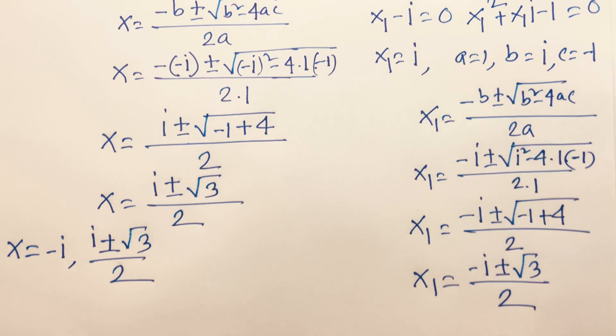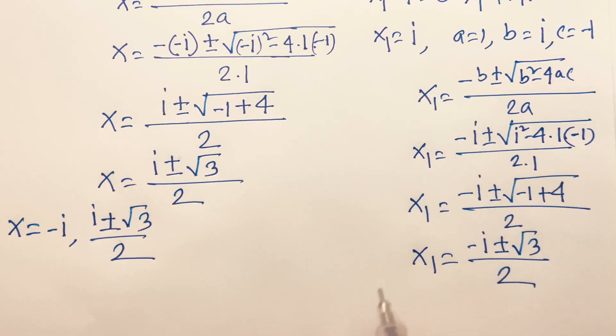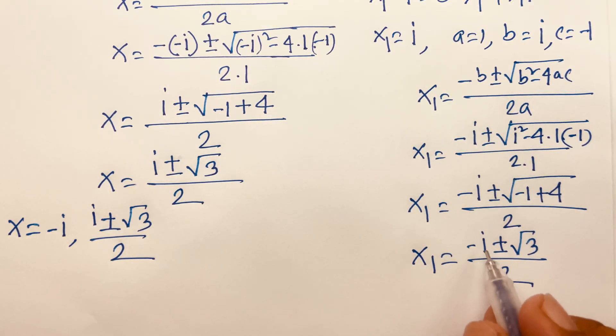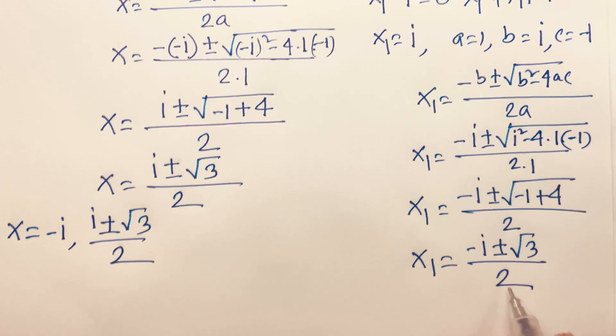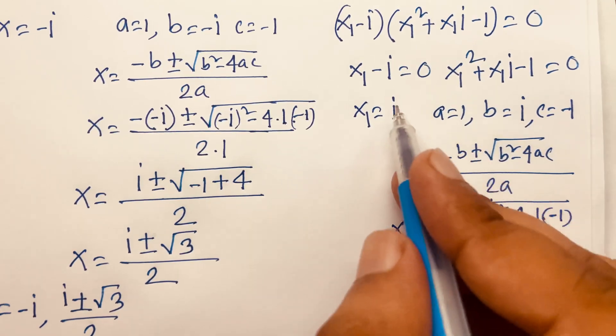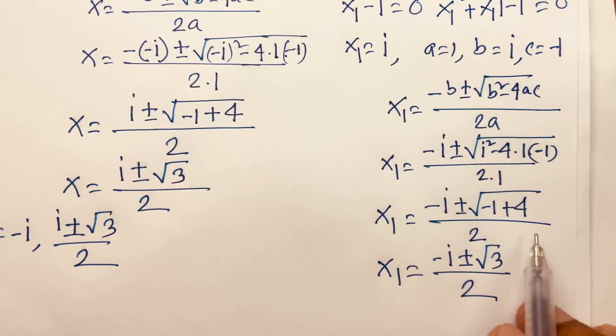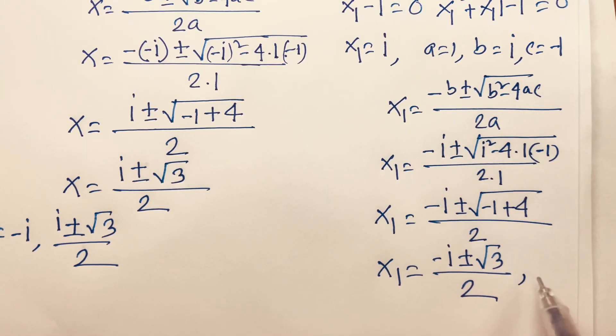So x1 equals minus i plus or minus square root of 3, all over 2. The three cube roots of minus i are: i, and (minus i plus or minus square root 3) over 2.